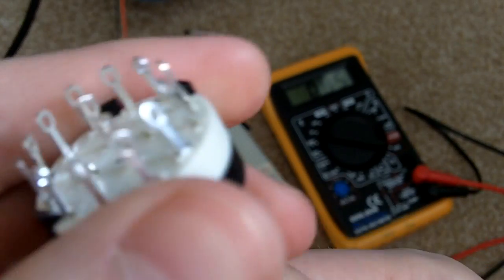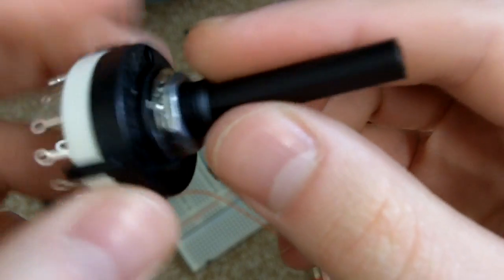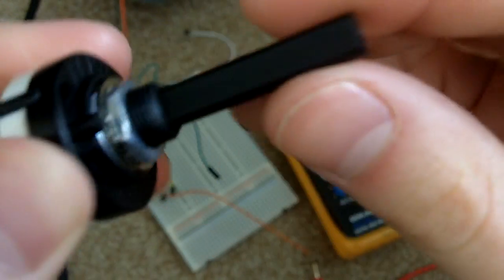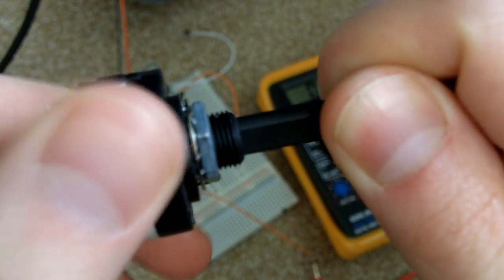I went out yesterday and bought some switches. I've got two types of switches. This one is a rotary switch which has six positions. This is position one, and then you've got two, three, four, five, six.